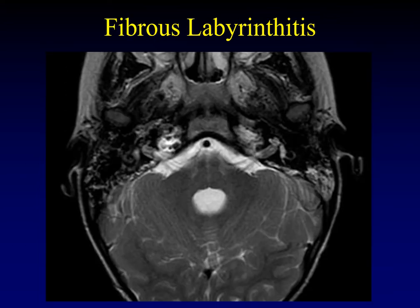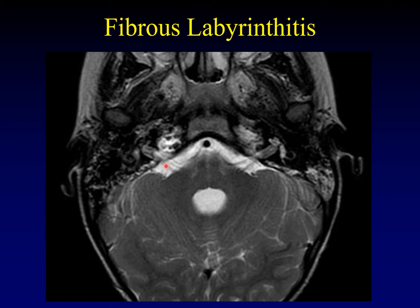Now comes the fibrous stage. Notice on the normal side, you have a beautiful image of bright T2 signal in the labyrinth, cochlea, and semicircular canals. If we look to the affected side, the cochlea is gone, the vestibule has a weird configuration, you can almost see a ghost of the lateral semicircular canal, but they're starting to fill in. We're starting to lose that endolymph and perilymph and the T2 signal that goes with them.